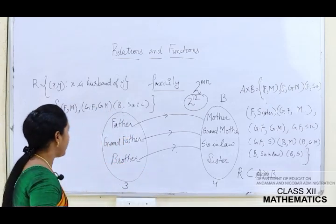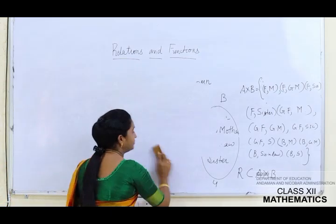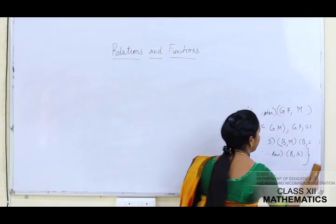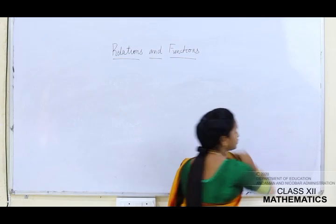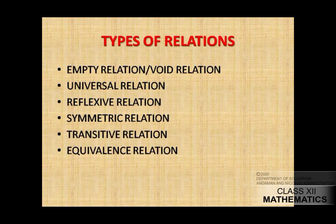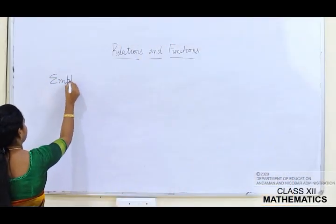Now let's move to the 12th class syllabus. The first thing to study is the types of relations. The types are: empty relation (or void relation), universal relation, reflexive relation, symmetric relation, transitive relation, and equivalence relation. Let's start with the first one - empty relation.